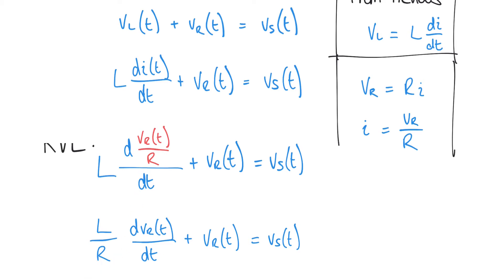This is another example of a first order differential equation. Notice that the left-hand side is all in terms of VR — any functions of time on the left are all VR, which is our output. The L and R terms are constants. The right-hand side is all in terms of the input VS. So here's another first order differential equation expressed entirely in terms of the output and the input of the system.